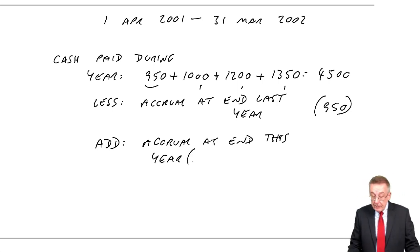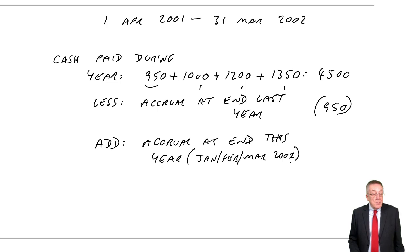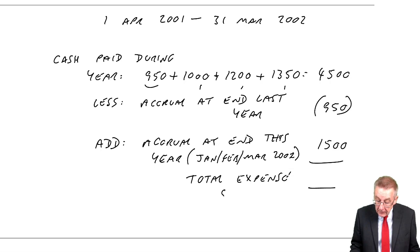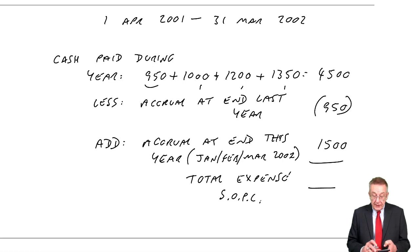Add the amount owing, the accrual at the end of this year. We'd only paid to December, so we owe for January, February, March 2002. And the question tells us the amount owing is £1,500. And so the total expense for this year, which will appear on the statement of profit or loss, £4,500 minus £950 plus £1,500, £5,050. So there's the expense.